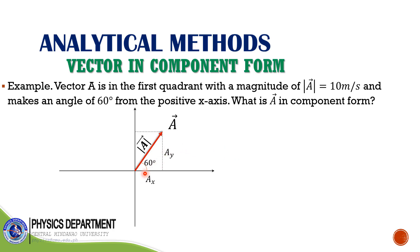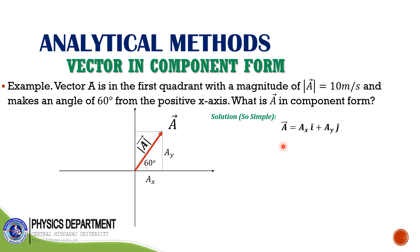For example, if vector A is in the first quadrant and makes 60 degrees from the positive X-axis, with magnitude equal to 10 meters per second, the question is: what is vector A in component form? Just use the general expression: vector A equals AX i-hat plus AY j-hat, where AX is the X component and AY is the Y component.